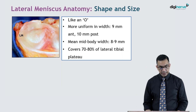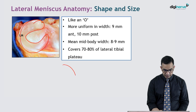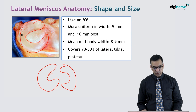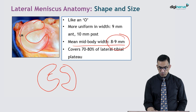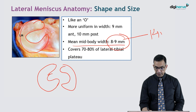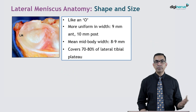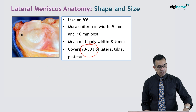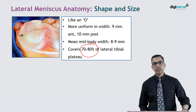The lateral meniscus is more like a complete circle — the medial meniscus is a half circle while the lateral meniscus is almost a full circle. It is more uniform in width: about 9 mm anteriorly and 10 mm posteriorly, with a mid-body width of about 8 to 9 mm. As with the medial meniscus, if the width exceeds 14 mm, you classify it as a discoid lateral meniscus (DLM). The lateral meniscus covers almost 70 to 80 percent of the lateral tibial plateau.